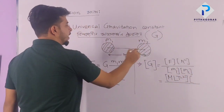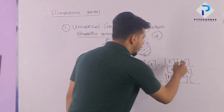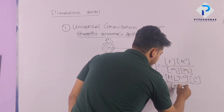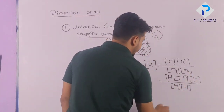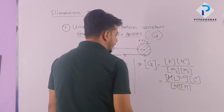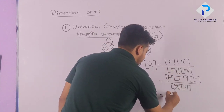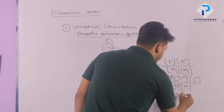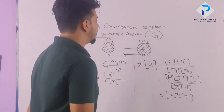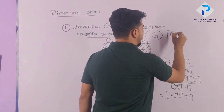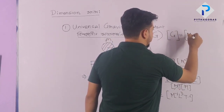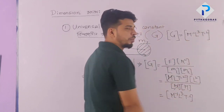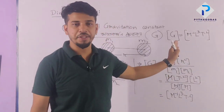R means distance, so R square dimension is L square. M1 and M2 are masses, dimension M. So G dimension: M times L T minus 2 times L square divided by M squared equals M to the power minus 1, L to the power 3, T to the power minus 2.